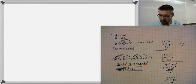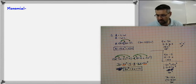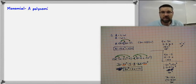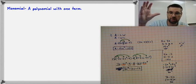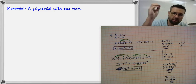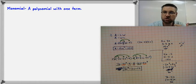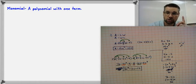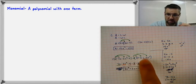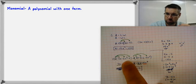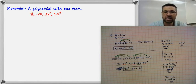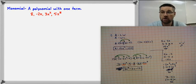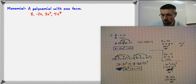Now let's look at some definitions — write these on the right-hand side. A monomial is a polynomial with one term. A polynomial is an expression that only has variables and whole number exponents, with coefficients out front. A monomial is a polynomial with only one term. Examples include: 8, negative 2x, 3x squared, and 5x to the 8th — each is a single, individual term.